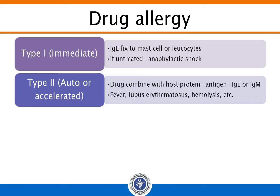Second is ATPO, or accelerated allergy, which occurs within 7 to 72 hours of drug administration. The drug combines with host proteins and converts them into antigens. The body then forms antibodies against them. On re-exposure with the same drug, an antigen-antibody reaction takes place which activates complement and damages the cells. Manifestations include fever, lupus erythematosus, hemolysis, and thrombocytopenia.